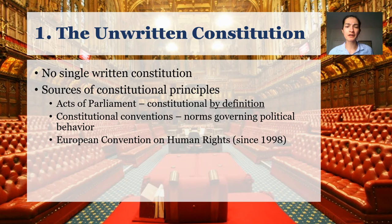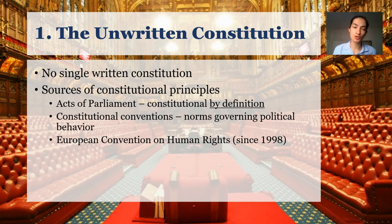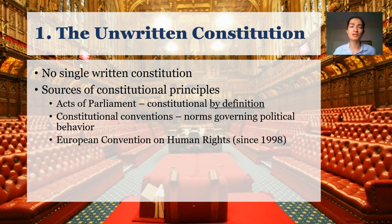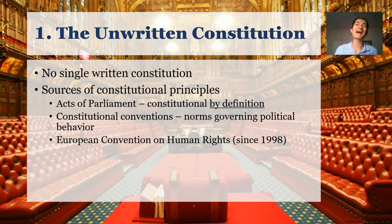Since 1998, by an act of parliament, the United Kingdom has said that the European Convention on Human Rights — which is a kind of Europe-wide Bill of Rights — is legally enforceable in British courts. If you're looking for an equivalent to a Bill of Rights in the United Kingdom, that's the closest you're going to get. It's important to note that even though the United Kingdom has left the European Union, the European Convention on Human Rights is separate from that and still has legally enforceable status, with the exception that acts of parliament are constitutional by definition and not going to be struck down.